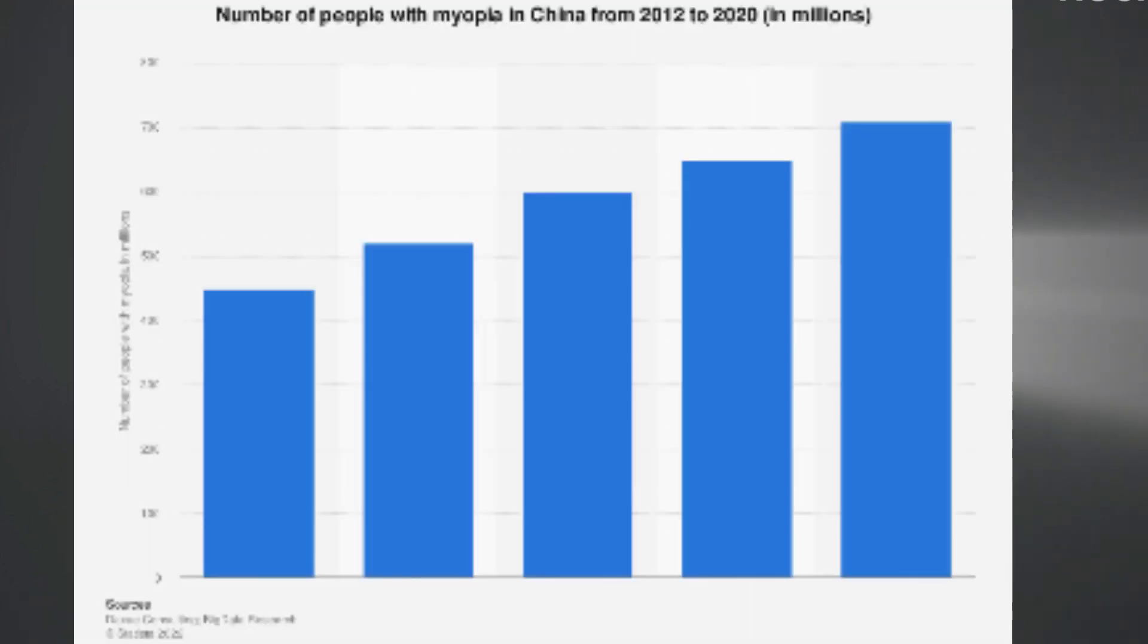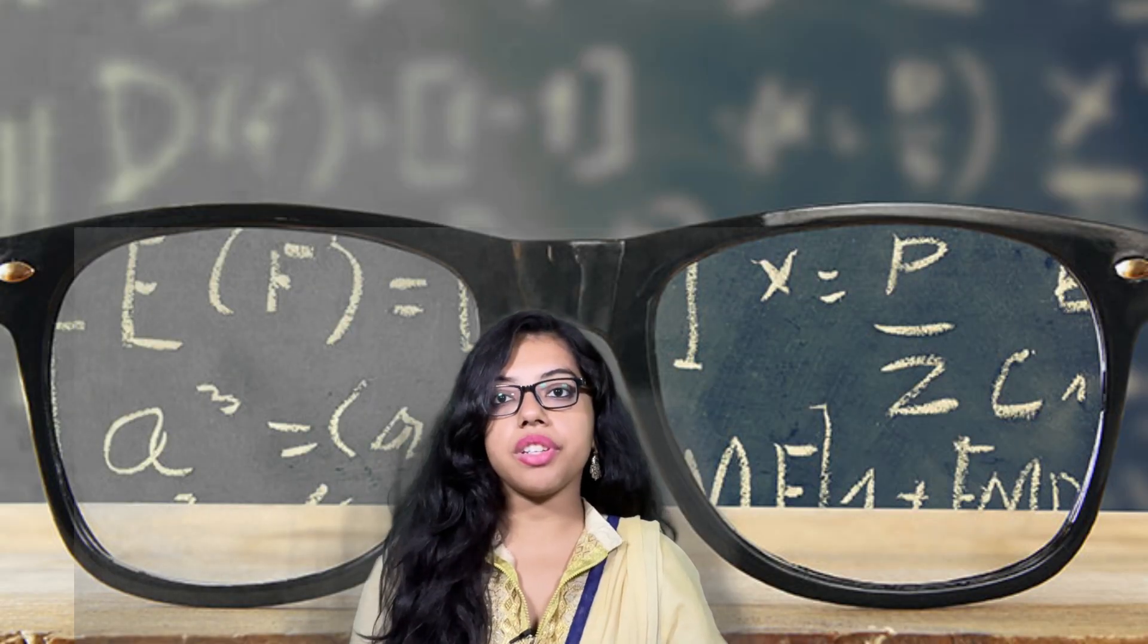China reports that up to 90% of its young population is myopic, a staggering jump from just 10% in the 1950s.